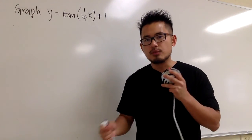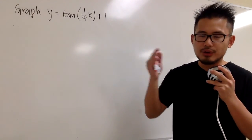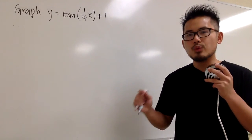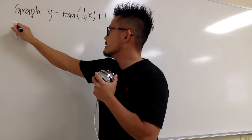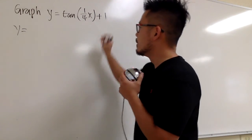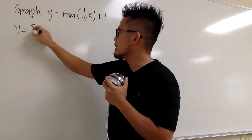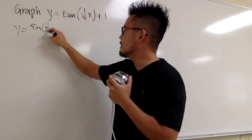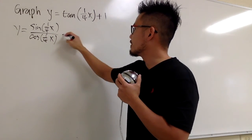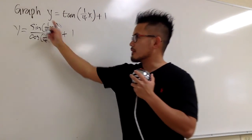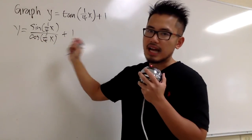Keep in mind the graphs for tangent, cotangent, secant, and cosecant all have vertical asymptotes, so we have to find the domain first. We can look at tangent as sine over cosine — the inside stays the same — so we have sine(1/4 x) over cosine(1/4 x), plus 1. Since we have a fraction, we have to make sure the denominator is not zero.